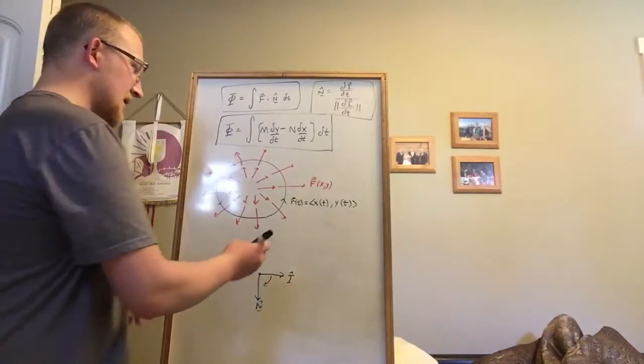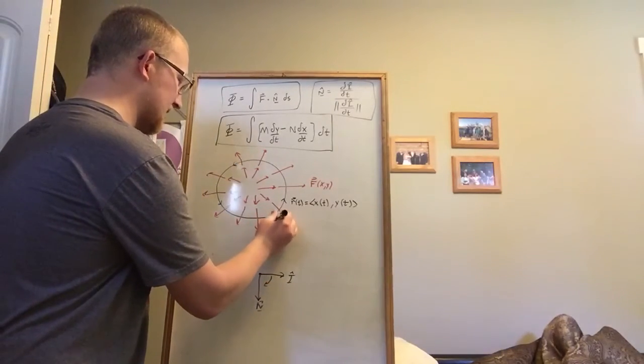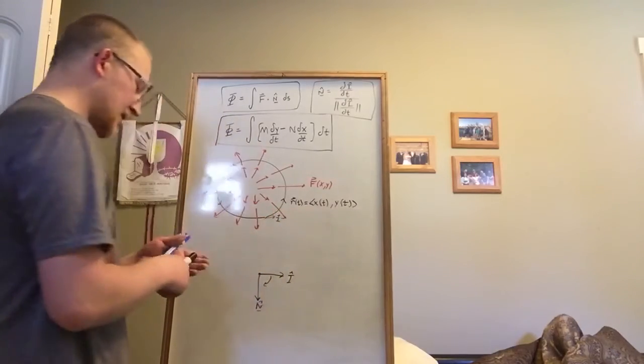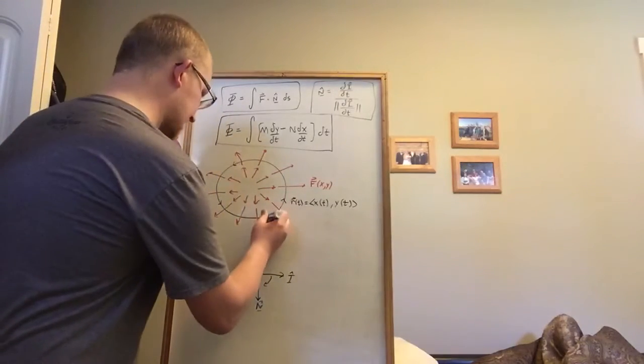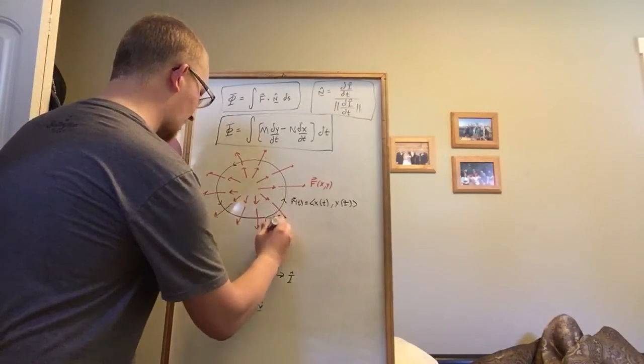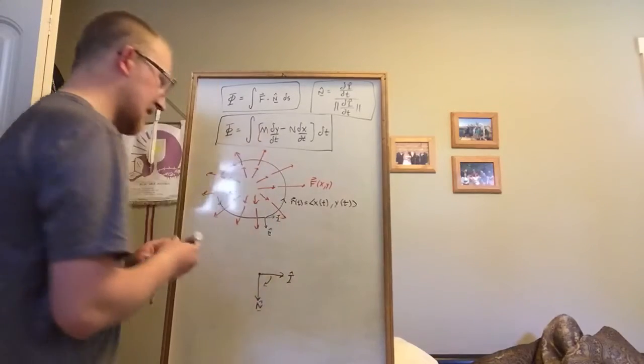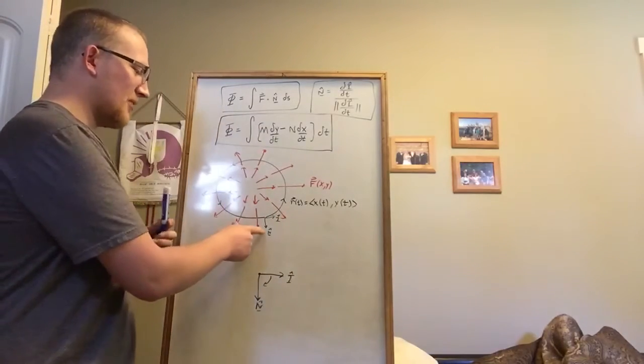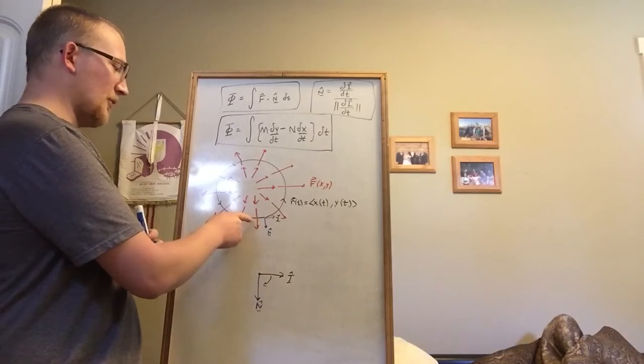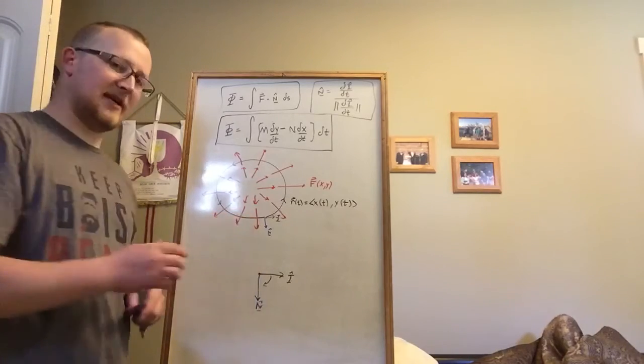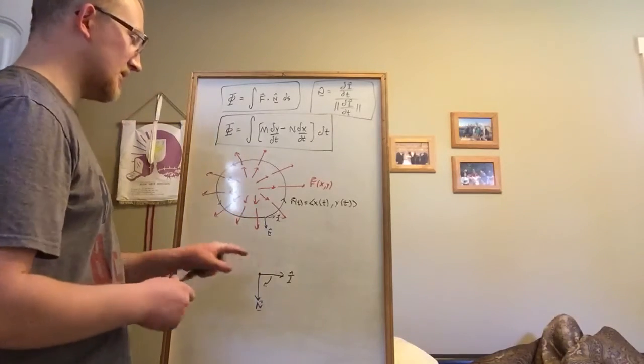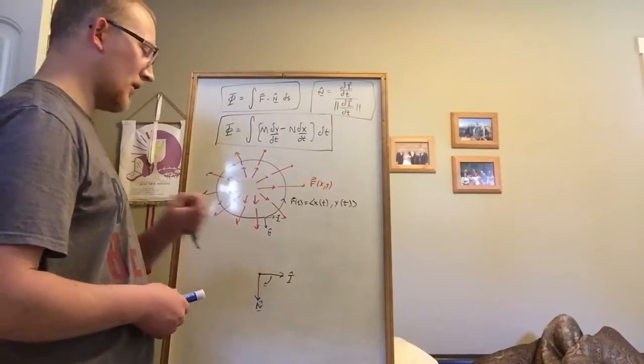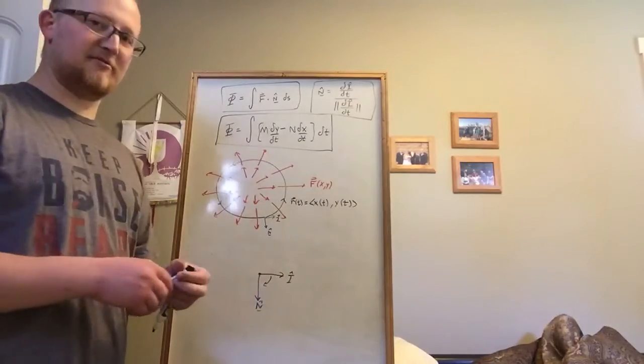if our normal vector is clockwise, if we are traveling this way, so there's our unit tangent vector, well then there's our unit normal vector, 90 degrees clockwise. And you'll notice that if we take the dot product of the normal vector with the vector field, that we're going to get a positive value. And so this convention does work with the positive negative flux convention.